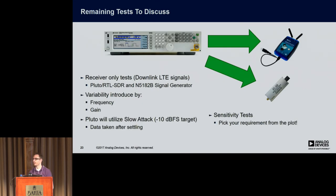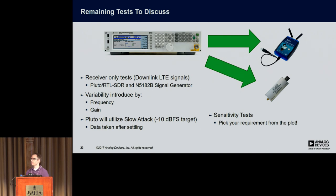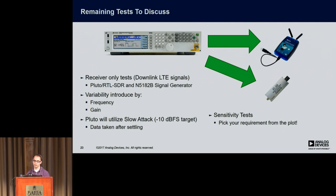The tests we're going to look at are all receiver tests — all downlink-based for LTE. We're going to look primarily at Pluto, but we'll have some graphs on RTL as well. We're using a signal generator to transmit all signals to the Pluto, and we're going to vary gain and frequency. We're also going to set Pluto up in slow attack mode. Pluto has fast attack, slow attack, and manual. We'll use the default gain table with no special tweaking, which should give a target of -10 dBFS.